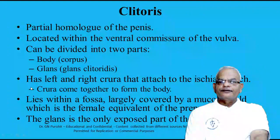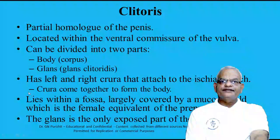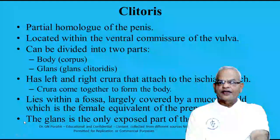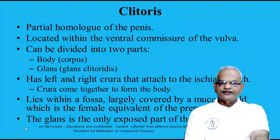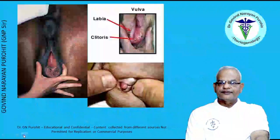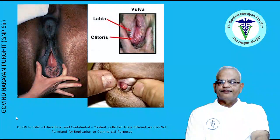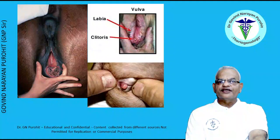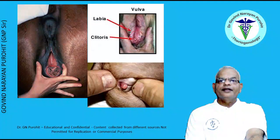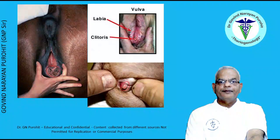The clitoris is the partial homolog of the penis, located within the ventral commissure. It can be divided into two parts: the body — with left and right crura attached to the ischial arch — and the glans, which is the only exposed part. The clitoris is prominent in the mare and has a fossa clitoridis. The clitoris is very small in the cow, while in the bitch it is more prominent.